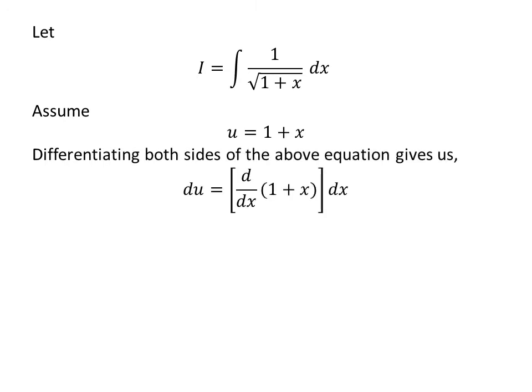Taking differential of both sides, we get differential of u is equal to derivative of 1 plus x with respect to x times differential of x. Derivative of 1 with respect to x is equal to 0 and derivative of x with respect to x is equal to 1. So, differential of u is equal to differential of x.